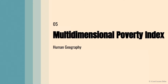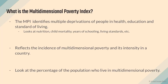In short, MPI. Your MPI is somewhat similar to your HDI — it does look at several similar factors. The definition of MPI is very simple: it identifies the different deprivations of people in terms of health, education, and standard of living.